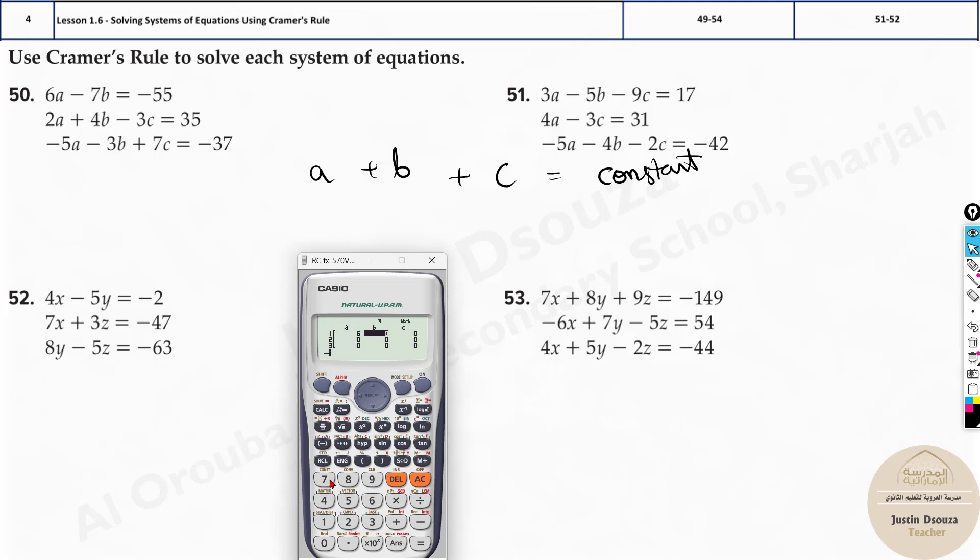Option 2. Here we have 6, then we have -7. But there is no c value, that means it's 0. There is no variable c. Then directly write d, it should be right of the equal to. It's anyways in the right side of equal to, -55. Let's go next. We have 2, 4, and -3. So 2, 4, -3, and then we have 35 over here. And then lastly we have -5, -3, and 7. And the constant is -37.